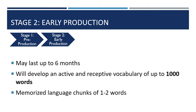Stage two is early production. This stage may last up to six months, and in this stage a student will develop an active and receptive vocabulary of up to a thousand words. Active vocabulary means the words they're able to produce; receptive means the words they're able to understand. Much of this stage is composed of students having memorized chunks of words — one, two, or three word phrases that may have been memorized rather than fully grasped.